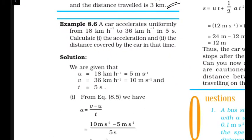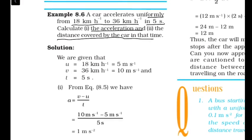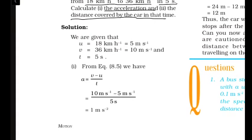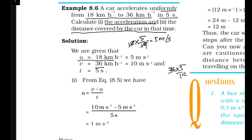Next question: A car accelerates uniformly from 18 km/h to 36 km/h in 5 seconds. Calculate the acceleration and the distance covered. Given data: initial velocity U = 18 km/h = 18 × 5/18 = 5 m/s. Final velocity V = 36 km/h = 36 × 5/18 = 10 m/s.